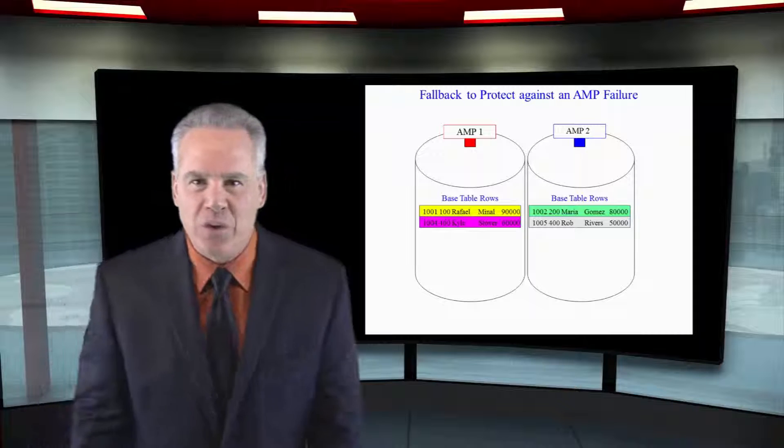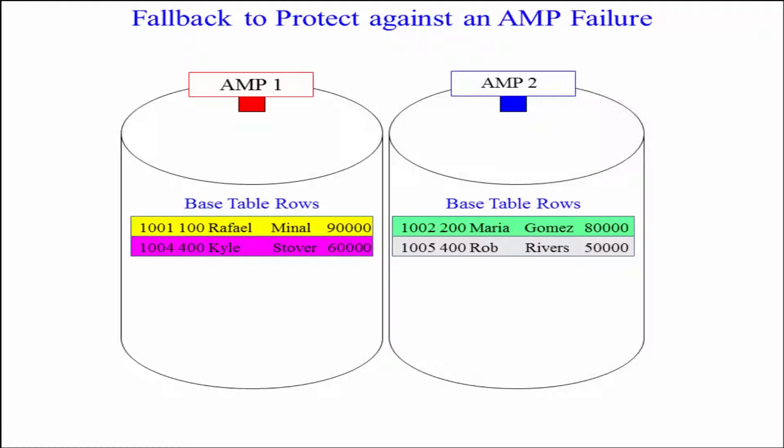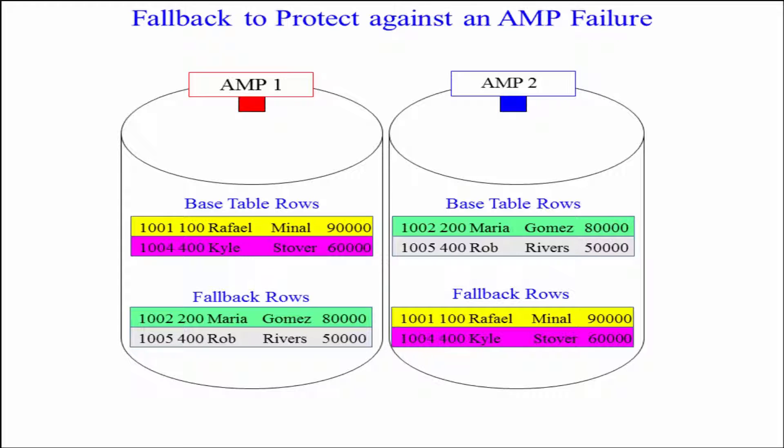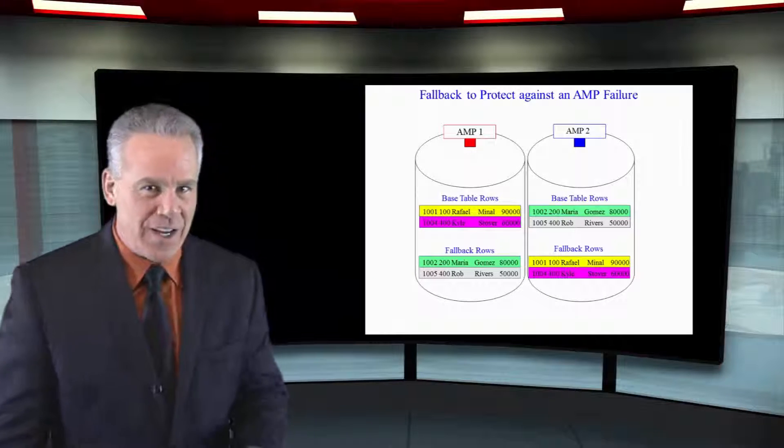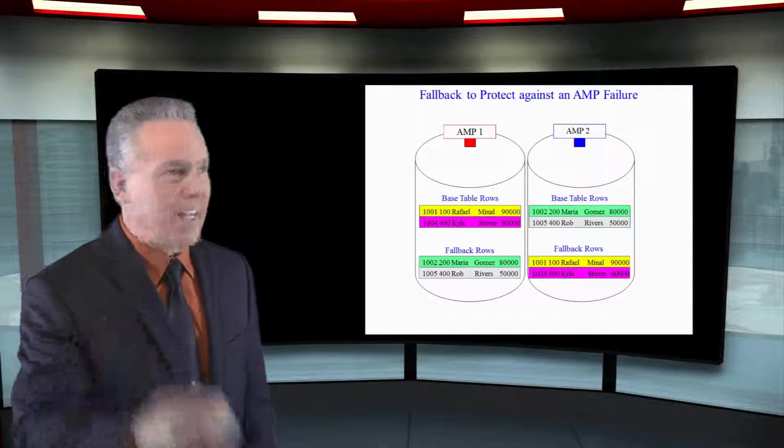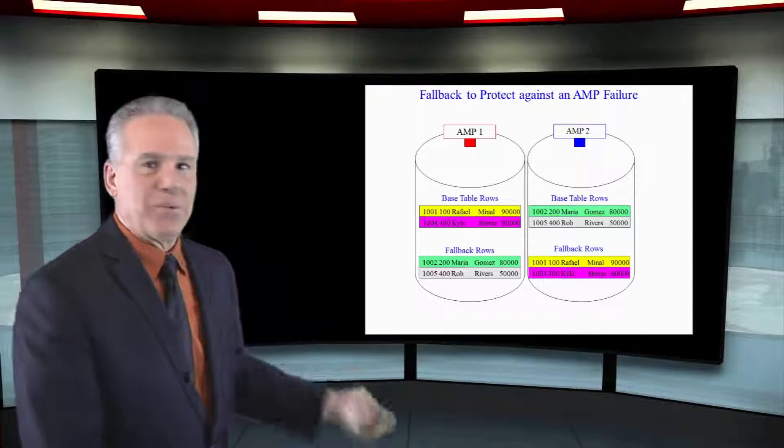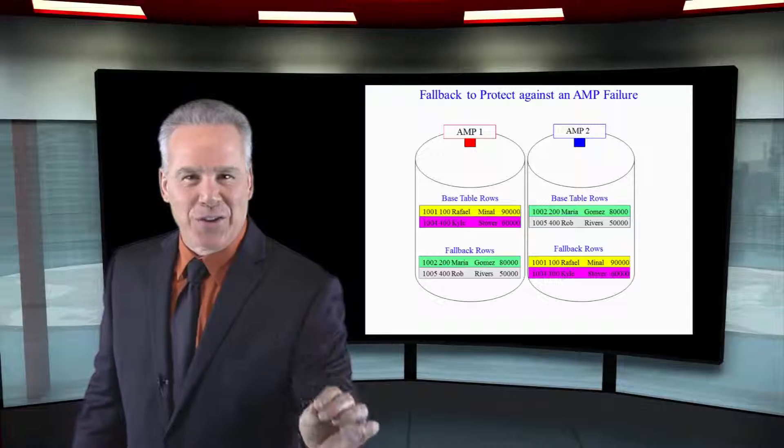Because as you can see here, each of my AMPs hold two rows, and they copy each other's two rows into their fallback area. And now, in case the first AMP breaks, AMP two is going to read its rows and it can also read the fallback rows for its buddy. You see, when you fall back, someone's got your back. These two buddy AMPs have each other's back.